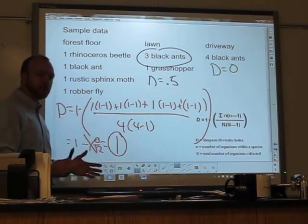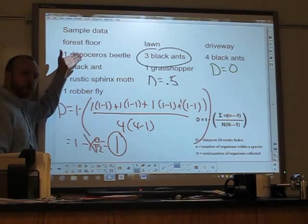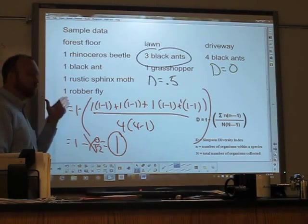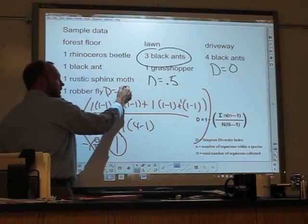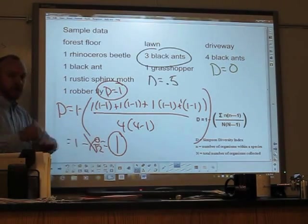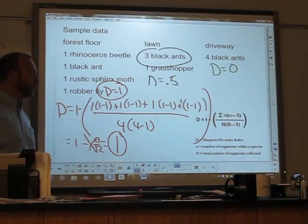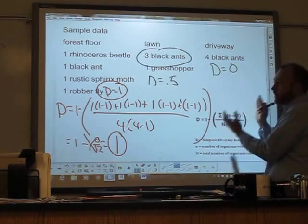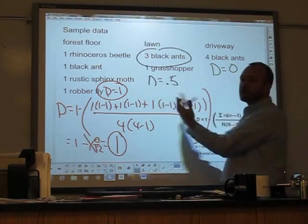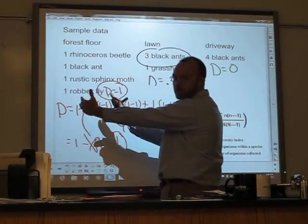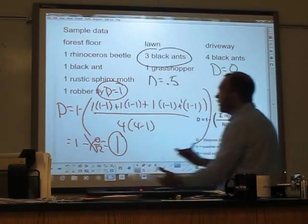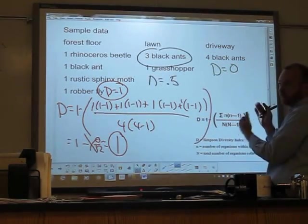Which means it's completely diverse. Every insect that was caught was a different species. It's perfect diversity. So the highest number you'll ever get for the diversity index is one, every species is different. The lowest number you'll ever get for the diversity index is zero, none of the species are different. And you can get any number in between. The closer it is to one, the more diverse it is. The closer it is to zero, the less diversity there is.